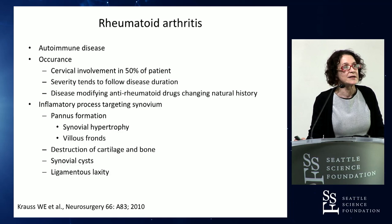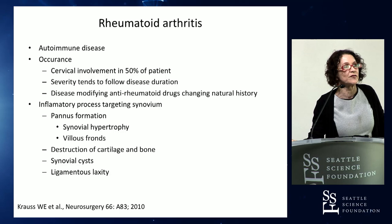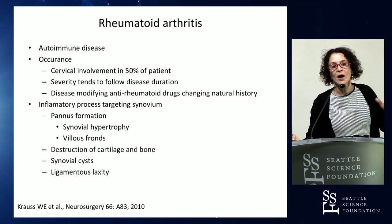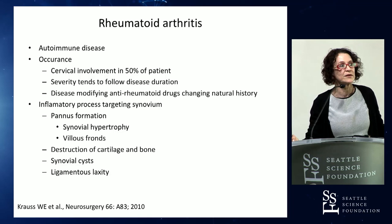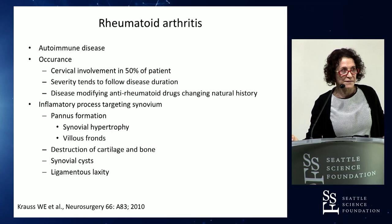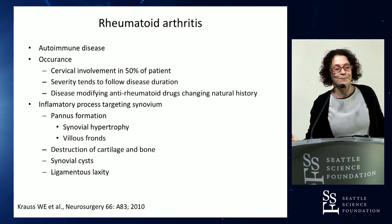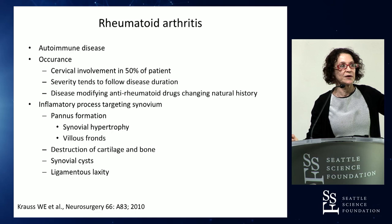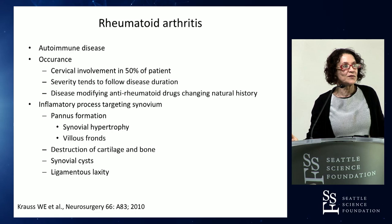Rheumatoid arthritis is an autoimmune disease. In about a fifth to half of patients you'll have some degree of cervical involvement. The severity tends to follow disease duration, meaning almost everyone will eventually have cervical involvement, but you have to have very long-standing disease to reach the stage this woman has. This appearance has been markedly decreasing since effective anti-rheumatoid drugs became available. RA is an inflammatory process targeting synovium, producing a pannus - synovial hypertrophy - a big solid clump of tissue. Cartilage and bone get destroyed, you can get synovial cysts, and ligaments get lax, hence the subluxation.